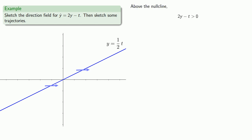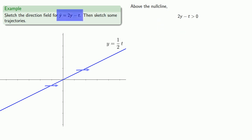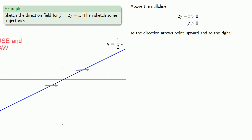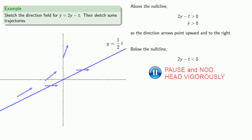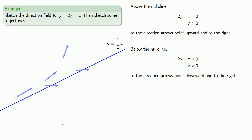If we're above the nullcline, 2y minus t will be greater than 0. And since 2y minus t equals y-dot, that means y-dot will be greater than 0, so the direction arrows will point upward and to the right. Moreover, the greater the value of y, the greater the value of y-dot, so the direction arrows are steeper the higher we go. On the other hand, if we're below the nullcline, 2y minus t will be less than 0, so y-dot will be less than 0, and the direction arrows will point downward and to the right.